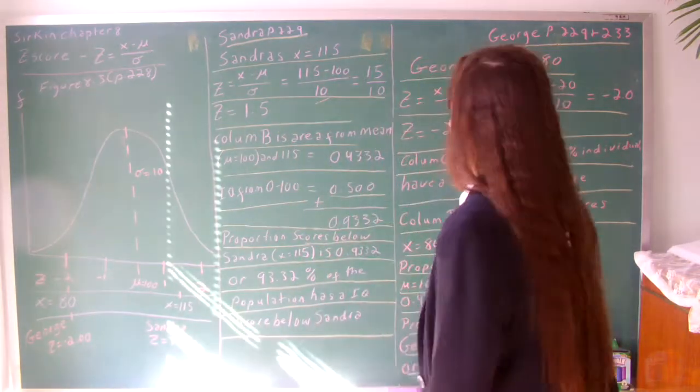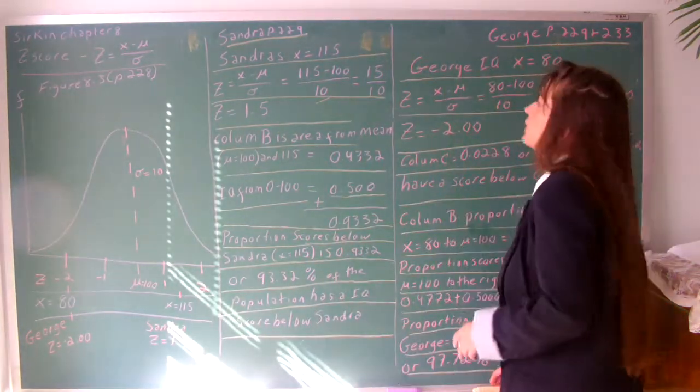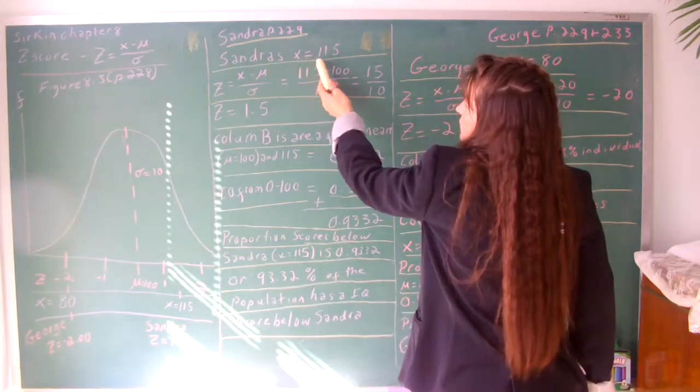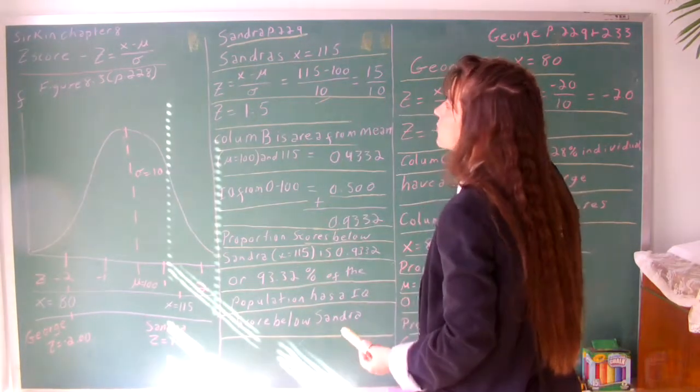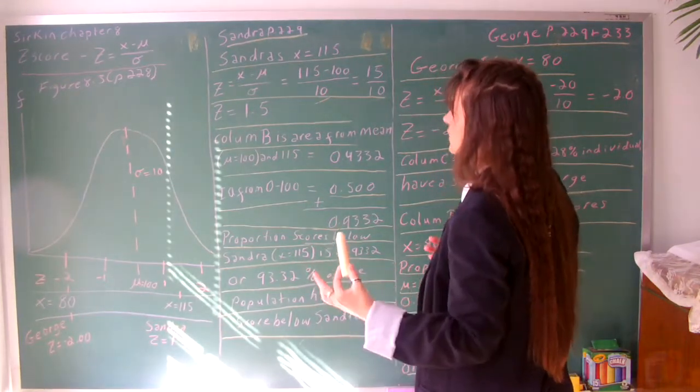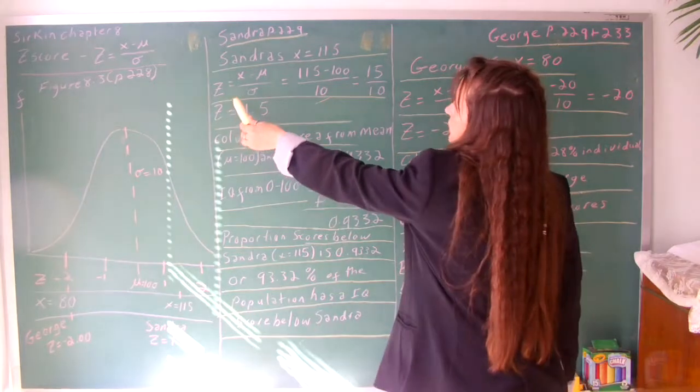Now let's go to Sandra's data in the book, page 229. Sandra, x equals 115. Show all the steps for the professor so you can see you understand the logic, the formula, how this works.